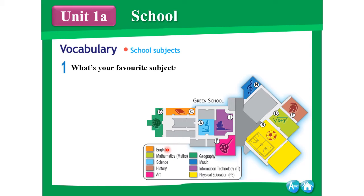First we have English — English is in room C. Next, mathematics — mathematics is in room D. Next is science — science is in room A. Next is history — history is in room E. Next, art — art is in room F. Next, geography — geography is in room G.